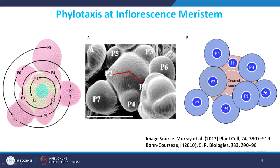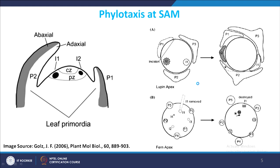How these primordia are positioned is defined by the hypothesis that some kind of inhibitory zones are created around the primordia. The circles basically denote the inhibitory zones, meaning that around each primordium up to a certain region, no other primordium will originate. The question remains: how precisely these inhibitory domains are maintained. Another important point is that coordination and communication between the meristem and the growing primordia is very, very important.